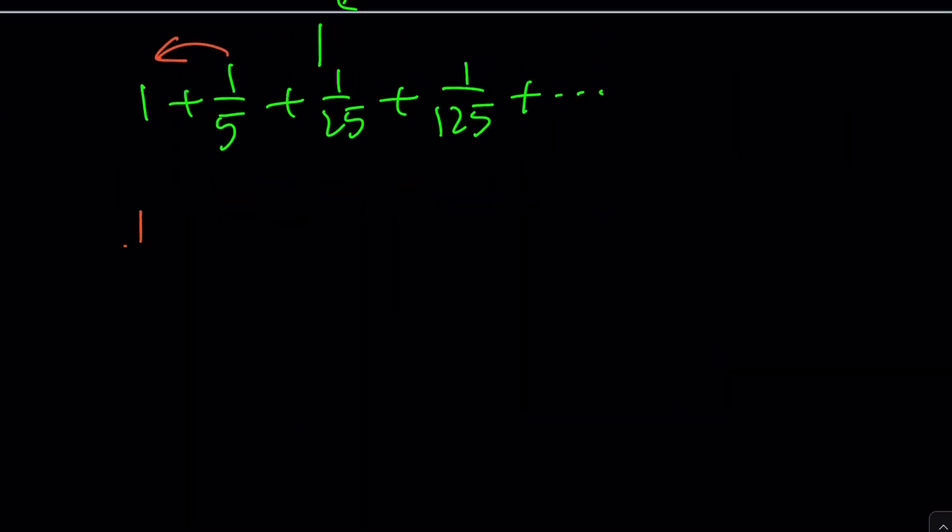So, this can be evaluated easily, but our sum is different because it kind of starts off with 1 over 5, but then it doesn't go into 1 over 25, it goes into 2 over 25, and then 3 over 125. So, the numerator increases.